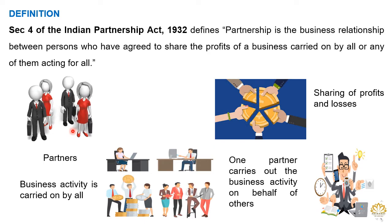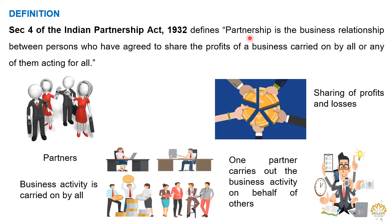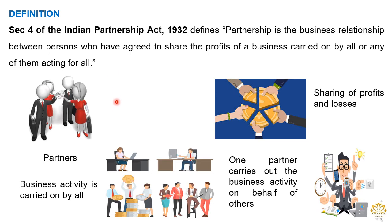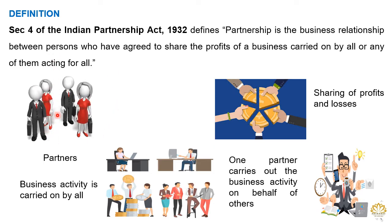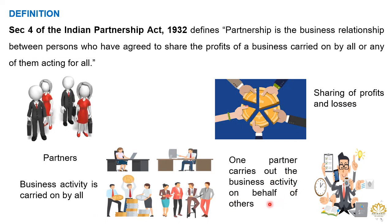The rules and regulations regarding partnership are given under the Indian Partnership Act, which was enacted in the year 1932. Section 4 of the Indian Partnership Act defines partnership as the business relationship between persons who have agreed to share the profits of the business carried on by all or any of them acting for all. So the definition says partnership is a relationship between persons who agree to carry out a business activity and share the profits and losses, and all or any one of the partners can carry out the business activity on behalf of the others.